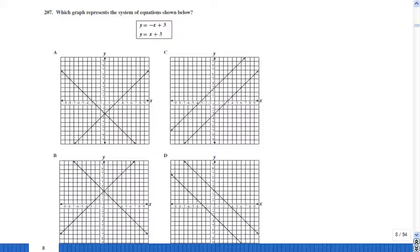There are many ways you can solve this problem. One way would be to find the solution of the system and see which of these four graphs has the two lines intersecting at that point. That will tell you the answer. That's one way. Another way is to